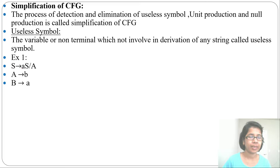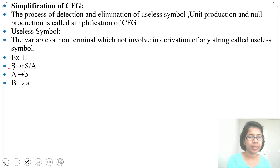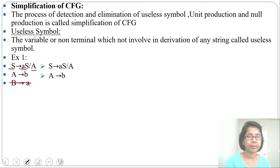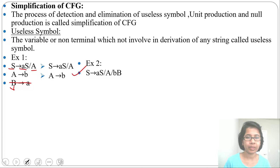First example: a language is given where S derives 'aS' or 'a', A derives 'b', B derives 'a'. From S you cannot reach to B. From S you can derive 'aS' or 'a' — there is no B reachable. That's why we delete B; it is a useless symbol. After removal: S tends to 'aS' or 'a', A tends to 'b'. B was the useless symbol, so we just remove it.